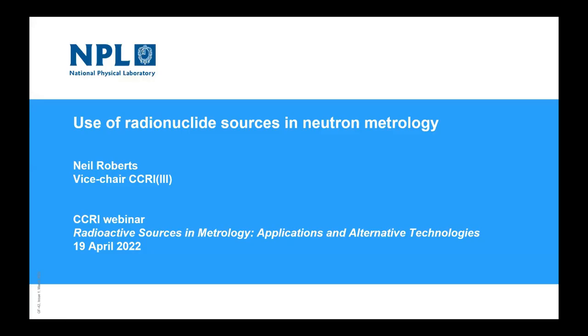Thank you, Frida. Clearly Section 2 has the most radioactive sources, but probably the lowest activity at the same time. These are some of the things the task group will be looking at to ensure we understand where the risks are to the metrology structure in ionizing radiation. I'll now introduce Neil, vice chair of Section 3, which deals with neutron metrology, at the National Physical Laboratory.